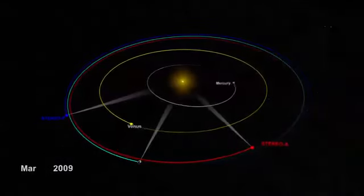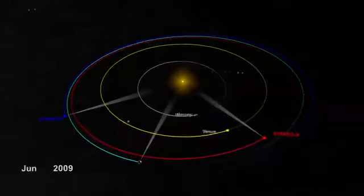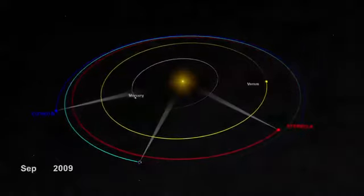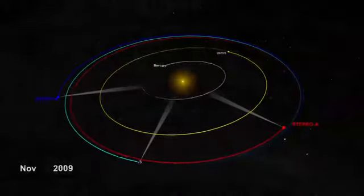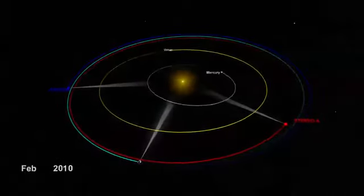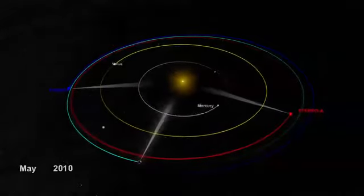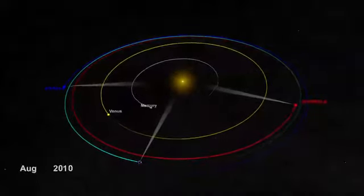As they've separated, our view of the Sun has increased. Other satellites near Earth, such as SOHO and now SDO, continue to watch the Sun from Earth's perspective, while the STEREO spacecraft see increasingly different views.